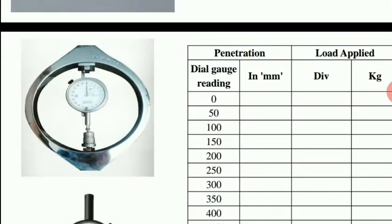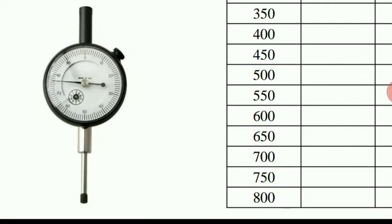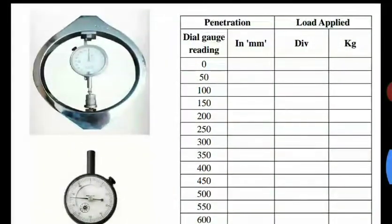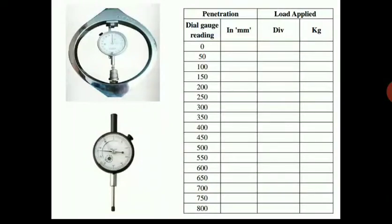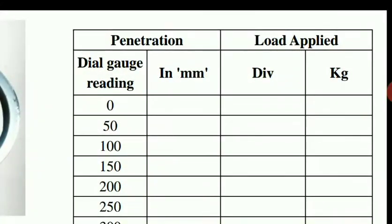The initial dial gauge reading is recorded first — you can also set it to zero. We need to take both the penetration values and the load values. In the tabular column you can see the dial gauge readings, which we then convert into mm, and then the load applied — first in divisions, then in kg.